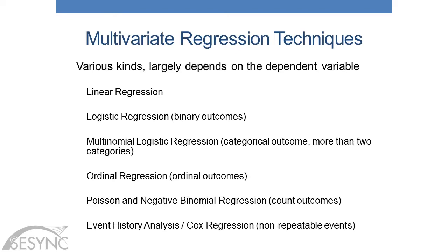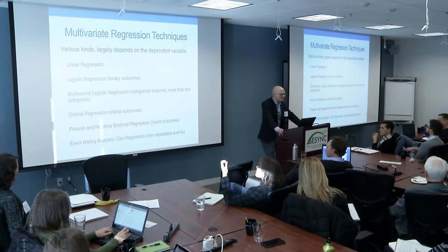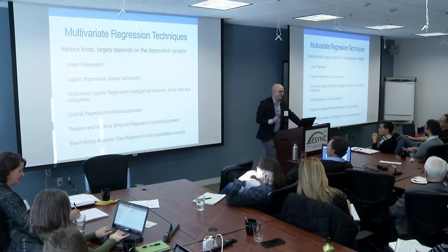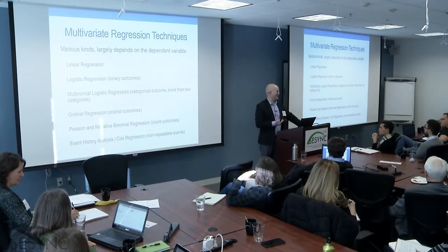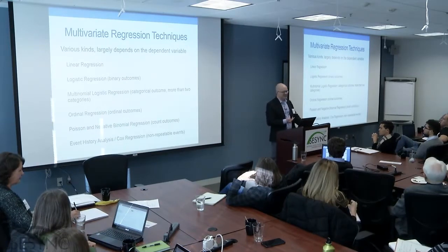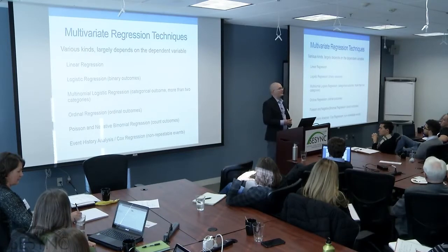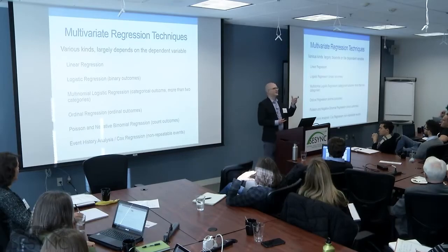Different kinds of regression techniques: the one most folks are familiar with is linear regression from seventh grade algebra. We also have a whole suite of specialized regression models that are largely a function of how the outcome is measured. We study all sorts of dependent variables. Some are appropriate for linear regression. Others are binary — dichotomous, a yes-no question: is a nation signed a treaty or not, zero or one. We study a lot of binary outcomes.